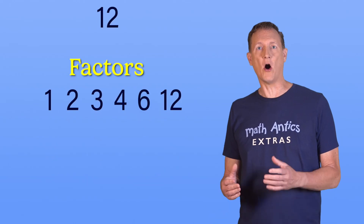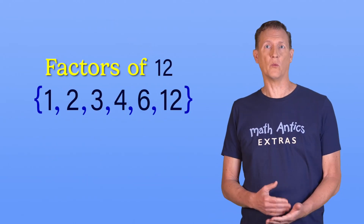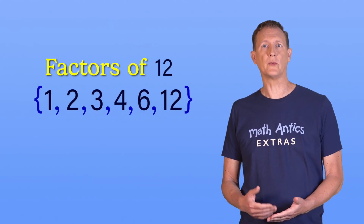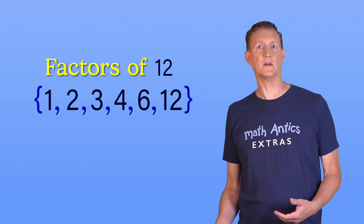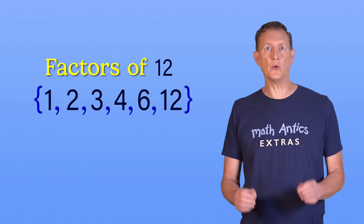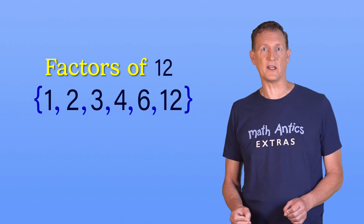So now we have a list of all the possible factors of 12: 1, 2, 3, 4, 6, and 12. Those are the only whole numbers that can be multiplied together to get 12.